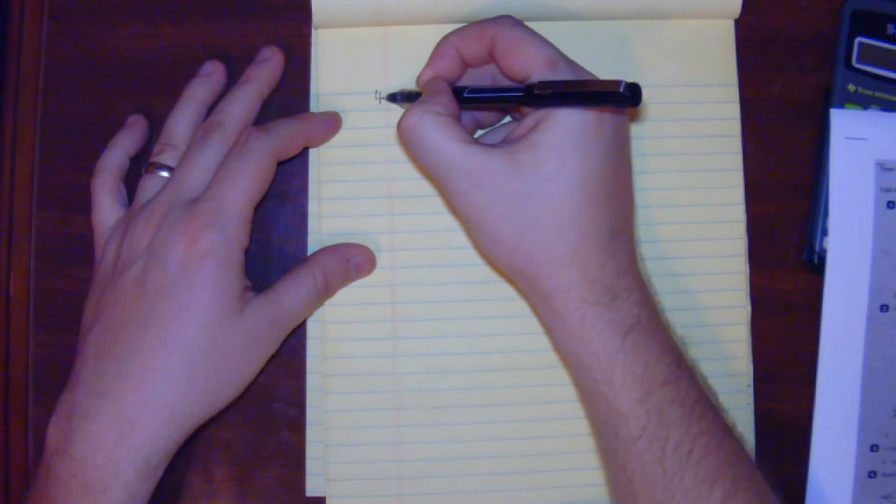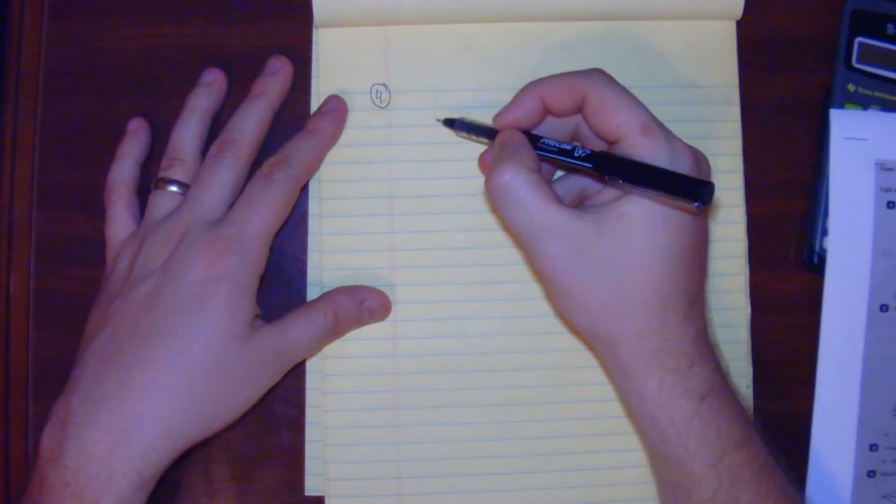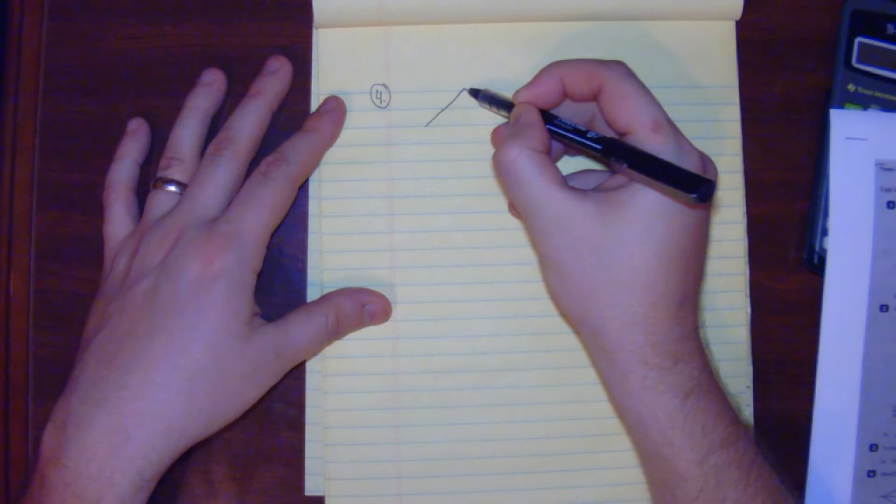Alright, we're looking at number four. Number four says to identify the congruent triangles - how do you know they're congruent? So what we have is the following.